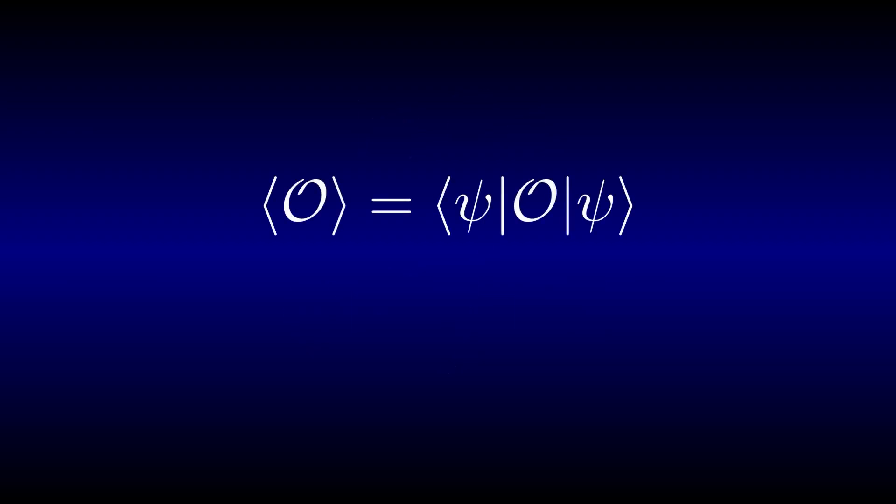This is precisely the reason why the angle brackets were chosen for the notation. Now we have a really short notation for writing an expectation value, but the Dirac notation can do so much more.